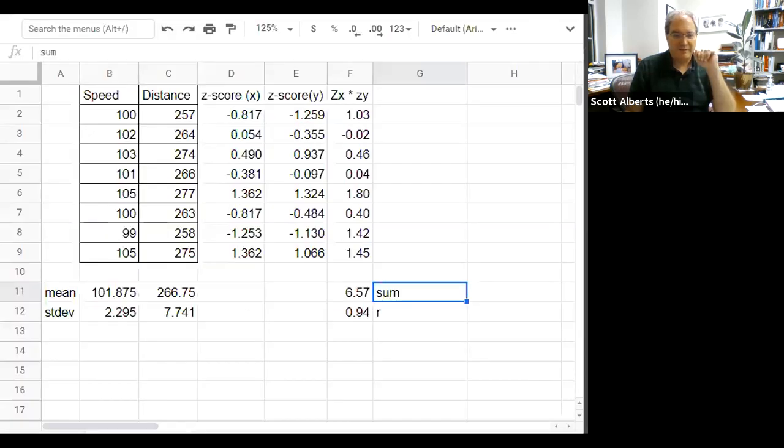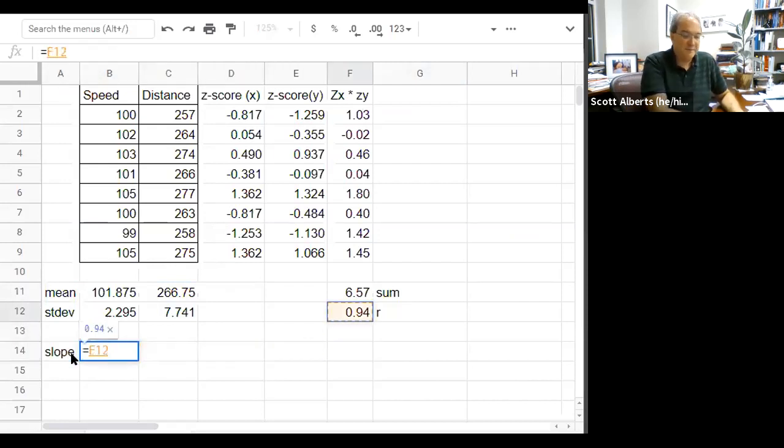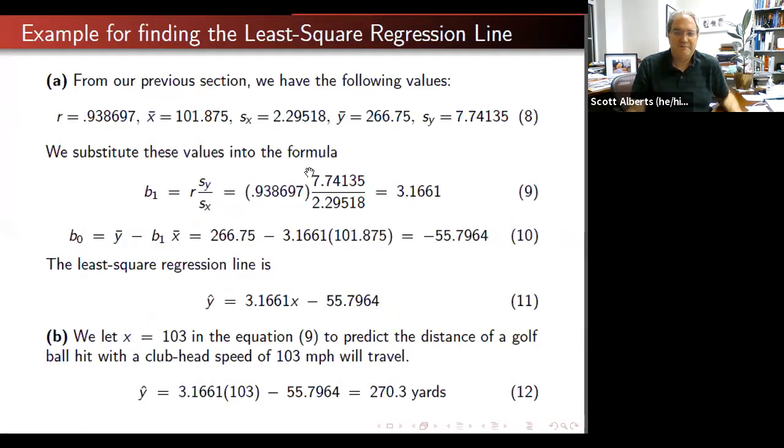So I'm not going to do it that way, I'm going to do it here back on my sheet. So we have all the values here. Here are mean and standard deviations. Here is our r. So the slope is going to be equal to r times the ratio of the two standard deviations, s sub y divided by s sub x. And if we do that, we get 3.166, 3.17 with rounding. Which is good, that's what she got. So again, we just take this correlation multiplied by the ratio of the two standard deviations.